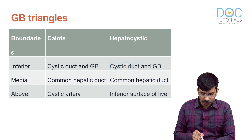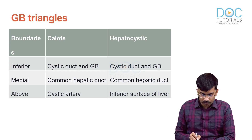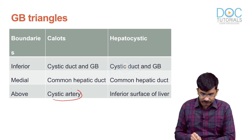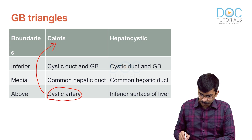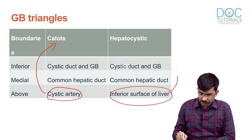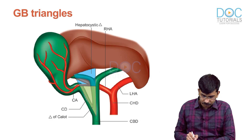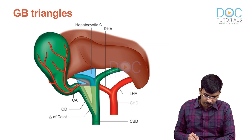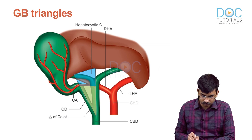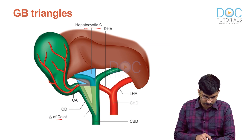To recap, there are two GB triangles. The inferior and medial walls are the same for both. If the superior wall is formed by the cystic artery, it is Calot's triangle. If it is the inferior surface of the liver, it is the hepatocystic triangle. Medially bounded by the CHD, inferiorly by the cystic duct, superiorly by the inferior surface of liver - hepatocystic triangle. Superiorly by the cystic artery - Calot's triangle, also known as the triangle of Cholecystectomy.